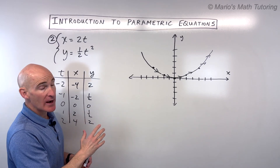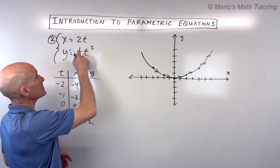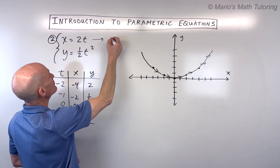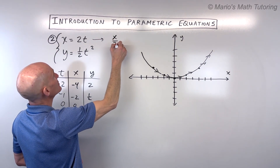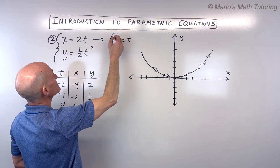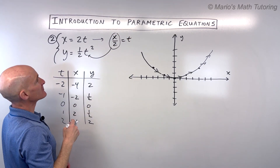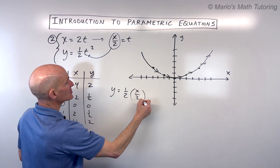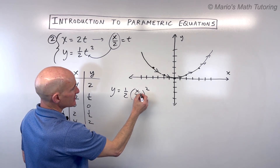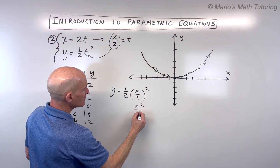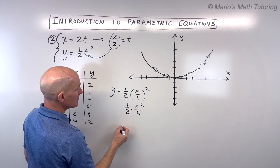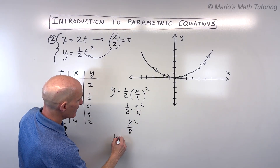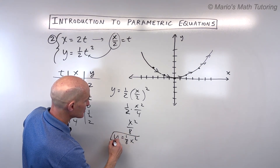As far as rewriting in rectangular form, we have to eliminate the parameter t. We divide both sides by two, giving us x divided by two equals t. Now we put that in place of t in the second equation, giving us y equals one half times the quantity x divided by two, squared. That's x squared over four times one half, which gives us x squared over eight, or y equals one eighth x squared — the equation of a parabola.